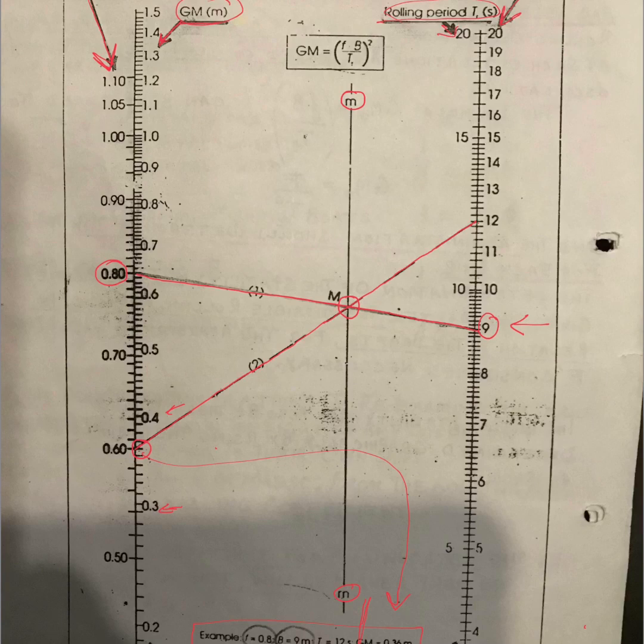That's pretty much it. See the theory first and then watch this numerical, and you'll get a good understanding of how the initial GM is calculated using the rolling coefficient diagram. Bye for now guys, keep trying.